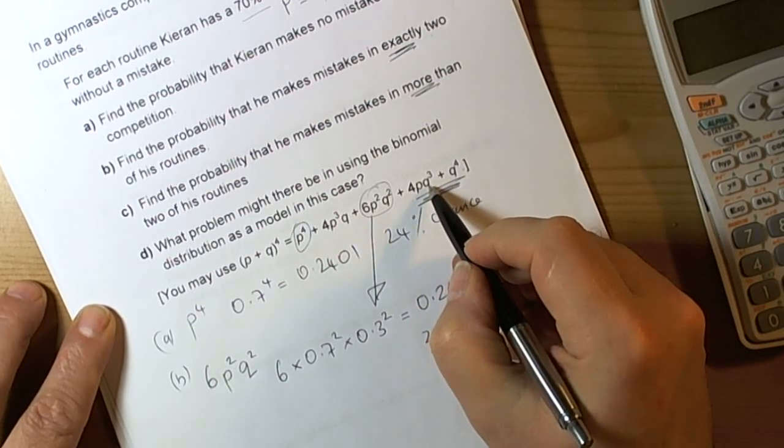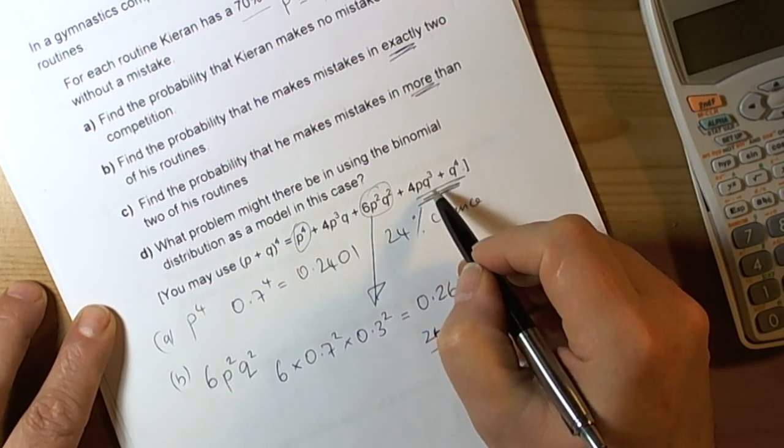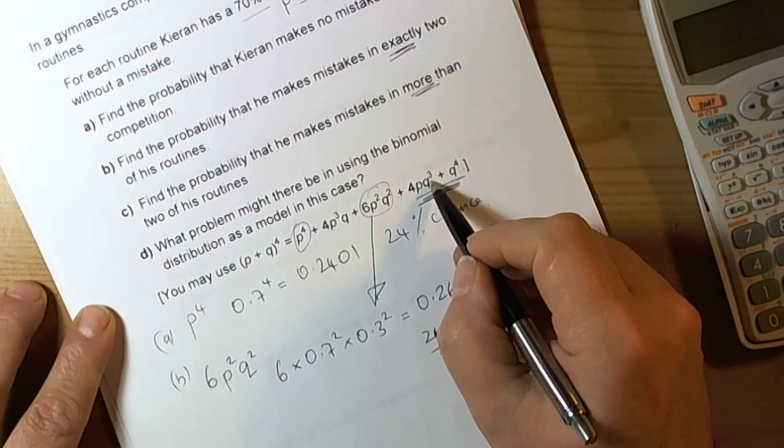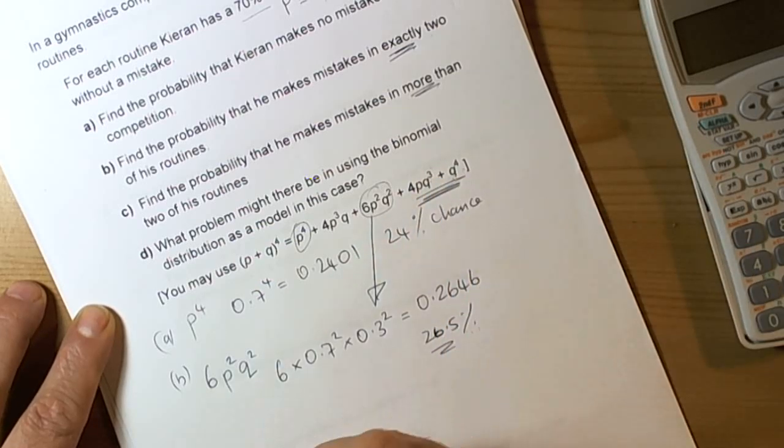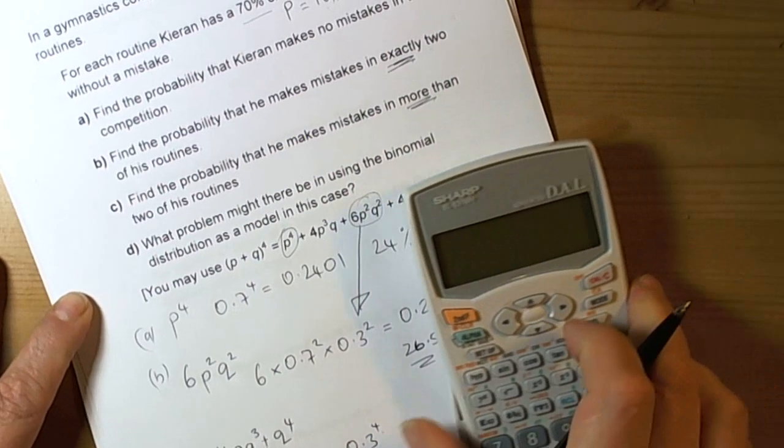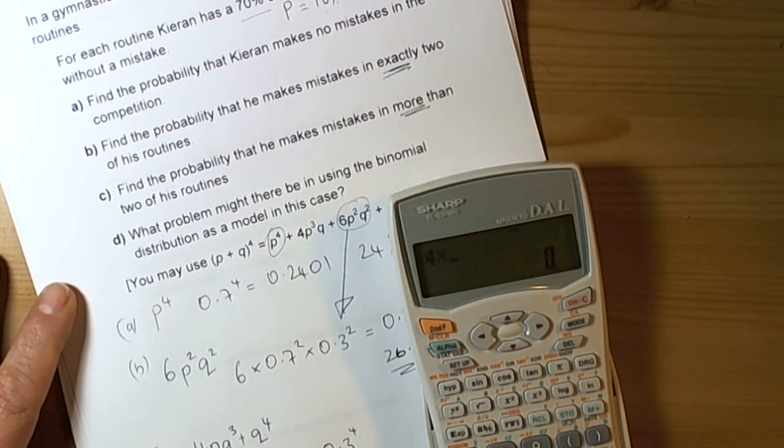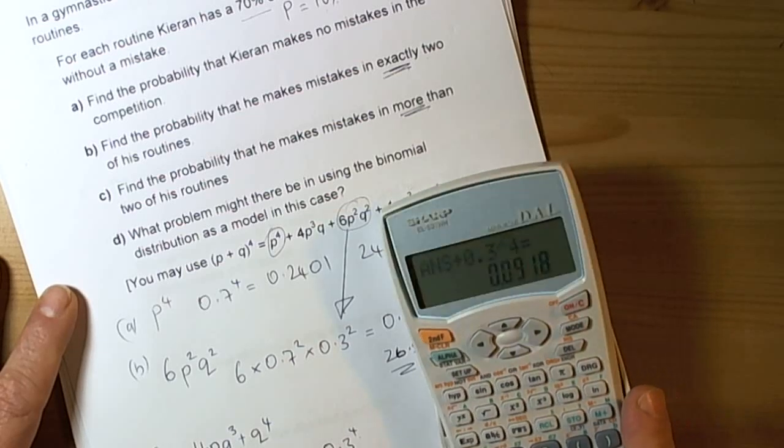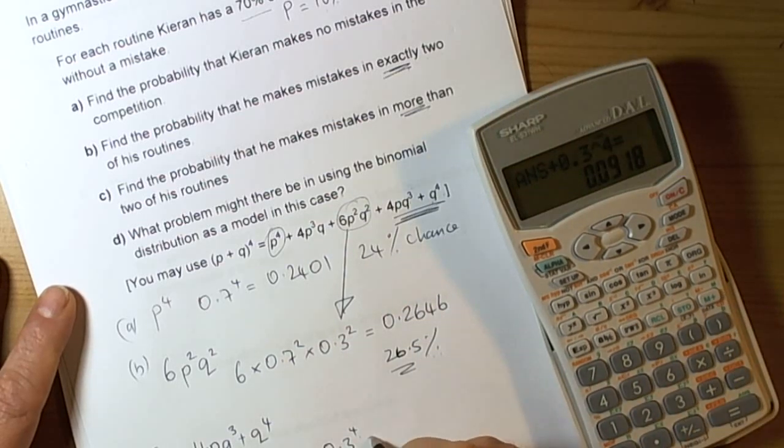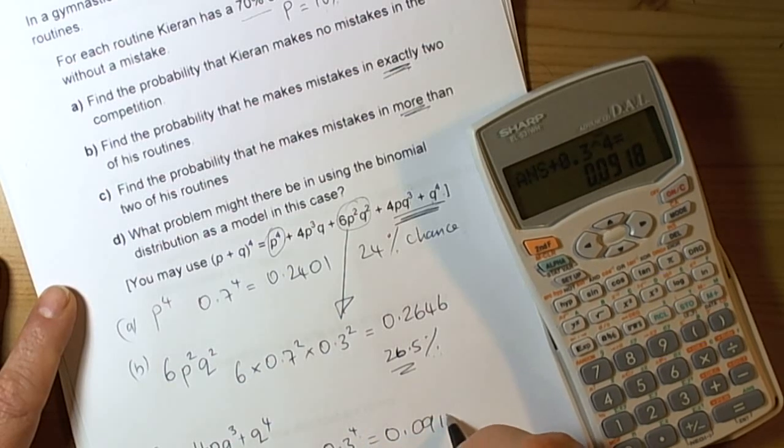So we're looking at this one because q means makes mistakes. q to the power of three is where he's made three mistakes, q to the power of four is four mistakes. So we have to work out 4p cubed q plus q to the power of four. We're doing 4 times the p value times the q value cubed plus the q value to the power of four. So we get an answer of 0.0918.